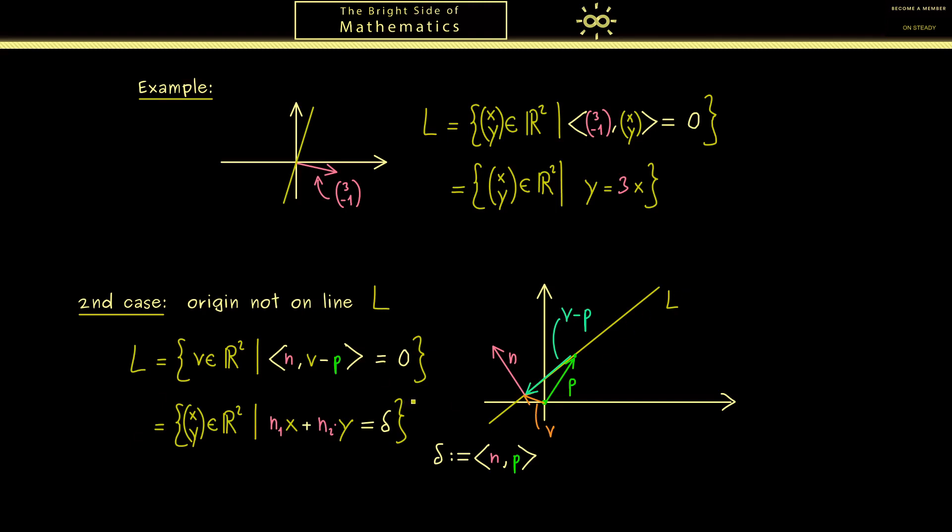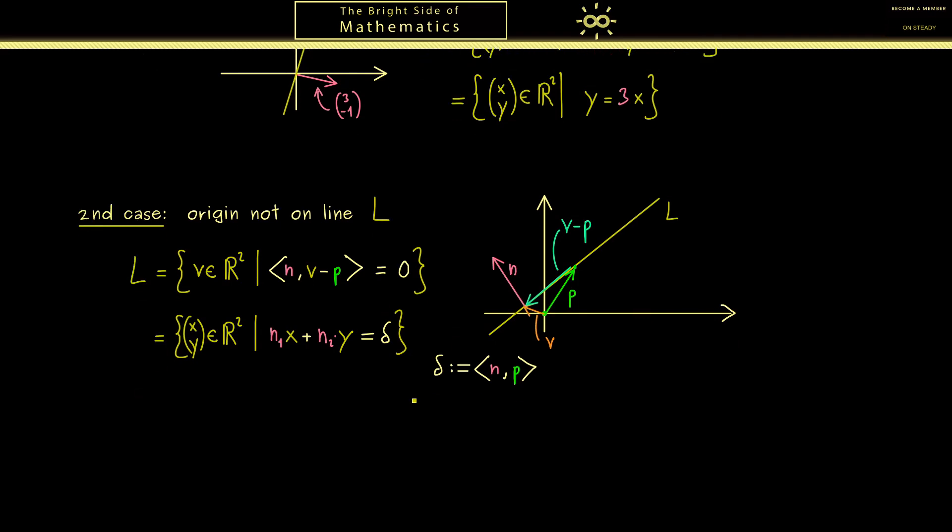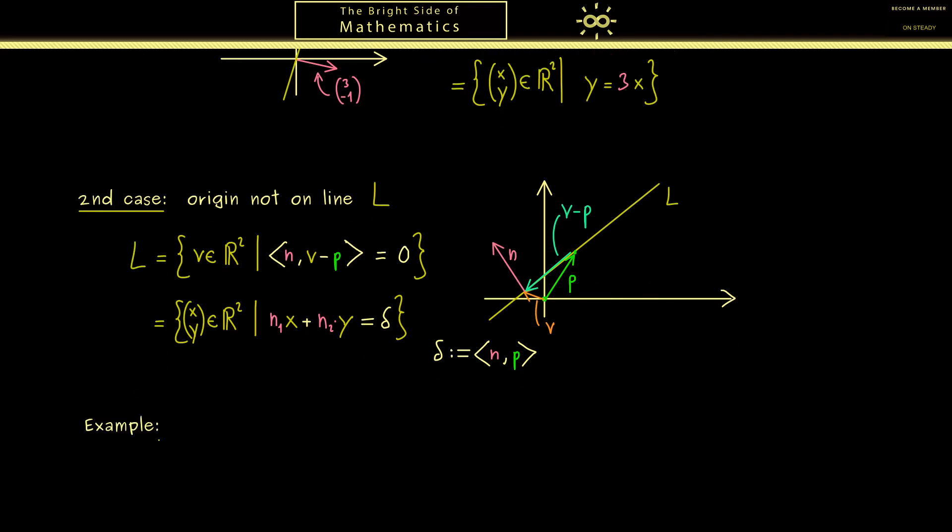And indeed this is not so surprising when we look at an example again. So maybe as before we can build a connection to the graph of a function again. So in the case like this, you could say this is simply y is equal to 2x plus 5. Now of course, as before, we should write this as a set L again. So L is equal to the set of all points x and y with this property here.